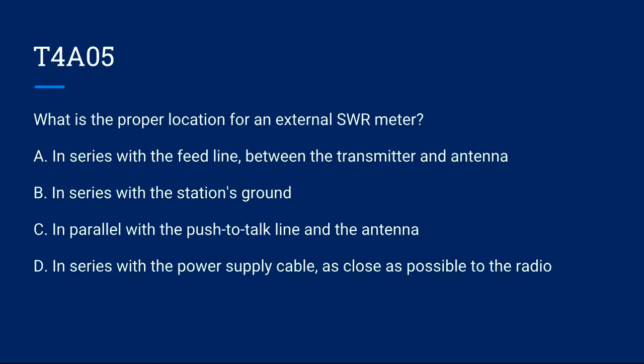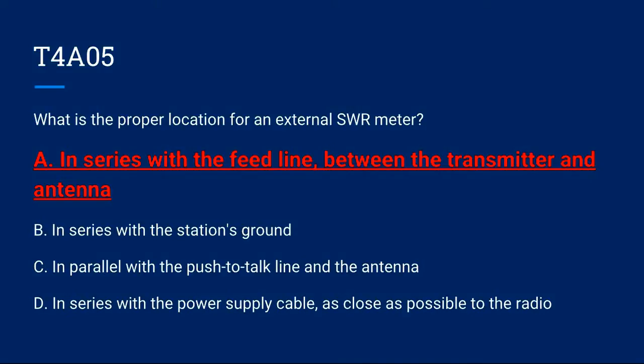T4A-05: What is the proper location for an external SWR meter? A. In series with the feed line between the transmitter and antenna. B. In series with the station's ground. C. In parallel with the push-to-talk line and the antenna. Or D. In series with the power supply cable as close as possible to the radio. Correct answer is A. In series with the feed line between the transmitter and the antenna.